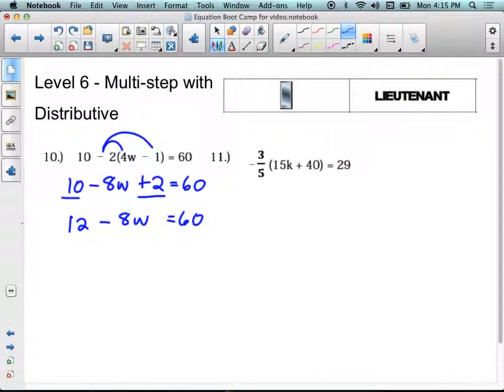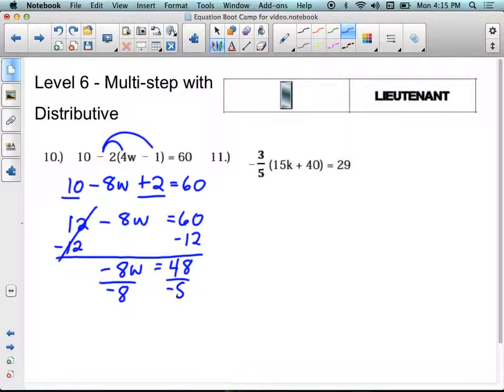Now this is a regular two-step equation. I've got negative 8w as my variable term and 12 as my constant term. So I'm going to subtract 12 from both sides. 12 and negative 12 cancel out. Remember to bring down the negative with the 8w. And that's equal to 48. Finally, I'll divide by negative 8 on both sides. Again, that's negative 8 times w. So division will undo that. W equals negative 6.